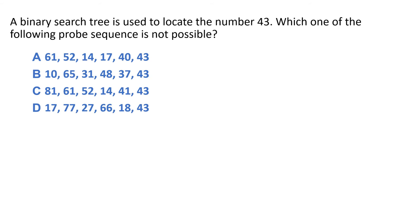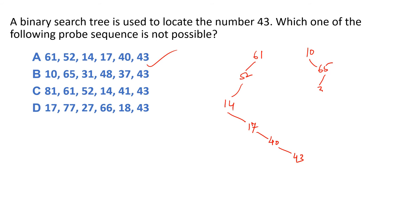Next question: humein 43 locate karna hai — kaun sa probe sequence galat hai? A option: 61, 52, 14, 17 (right ki taraf), 40 (right ki taraf), 43 — bilkul sahih sequence. B option: 10, 65 (bada), 31 (chota), 48 (bada), 37 (left ki taraf), 43 (bada) — so 10 se 65, 65 se chota 31, 31 se bada 48, 48 se chota 37, 37 se bada 43 — yeh bhi valid sequence hai.